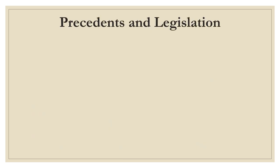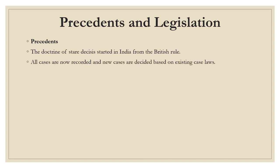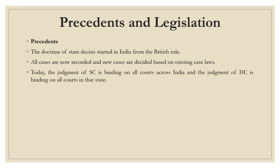Next is precedent. Precedent means the previous judgment. The doctrine of stare decisis started in India from the British rule — all cases are now recorded and new cases are decided based on existing case laws. These case laws must be leading case laws out of which some principles have been laid down. The reference has to be given in court and the present decision is decided on the basis of those cases. Today, the judgment of the Supreme Court is binding on all courts across India, and the judgment of the High Court is binding on all courts in that state.